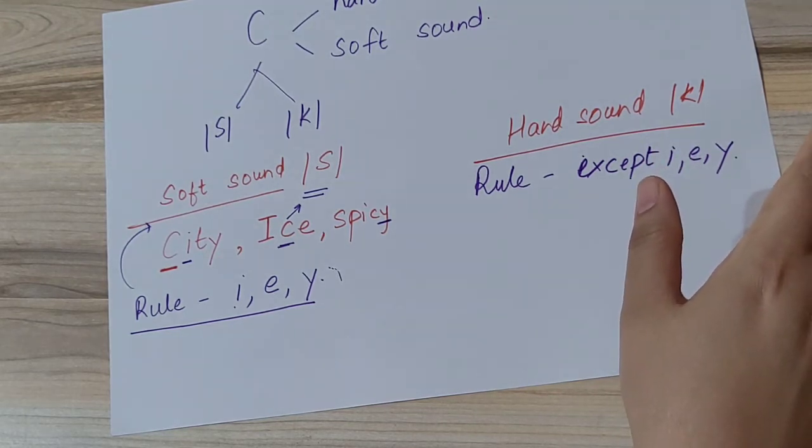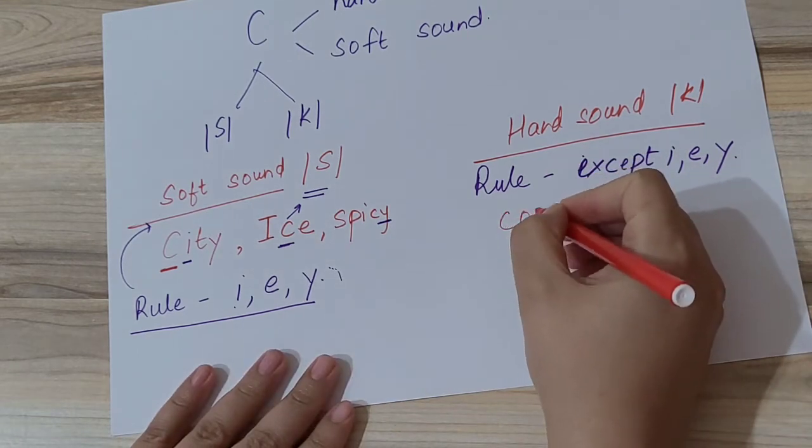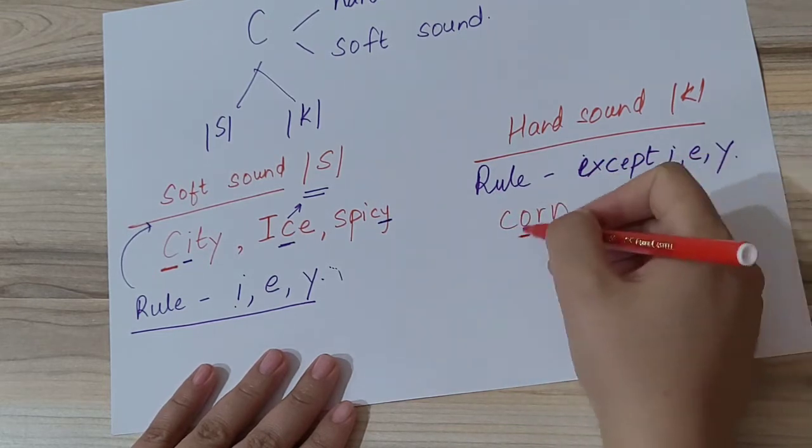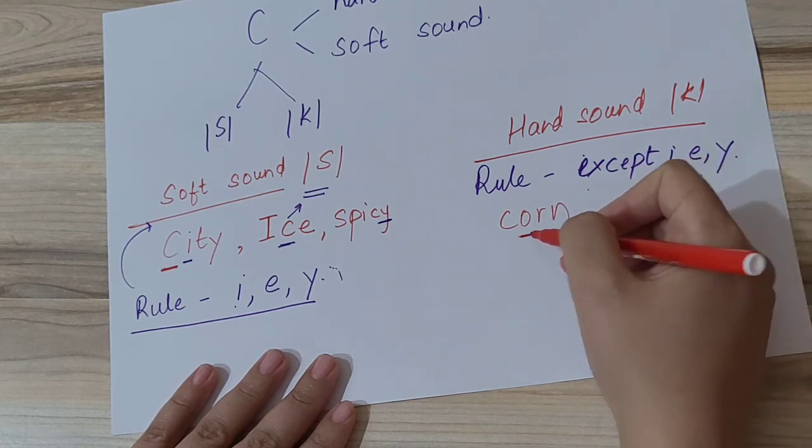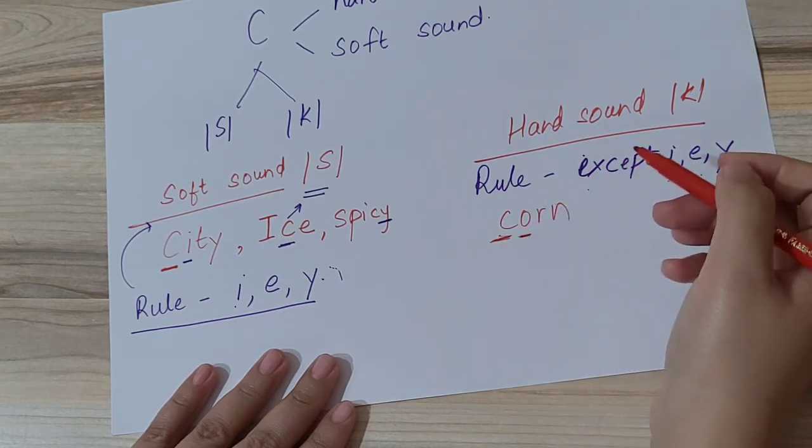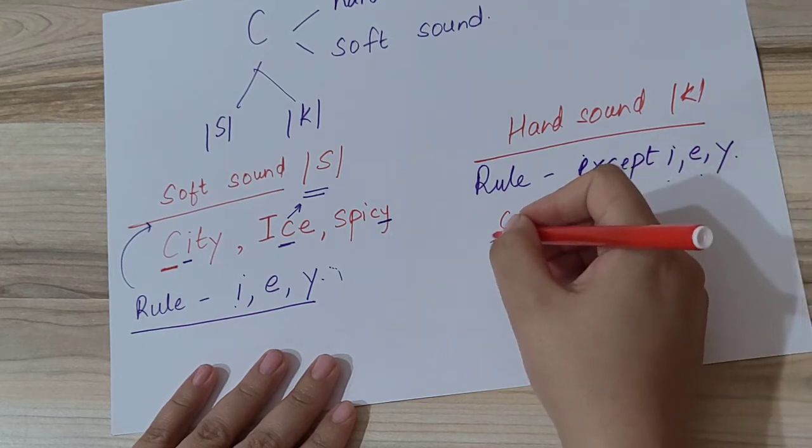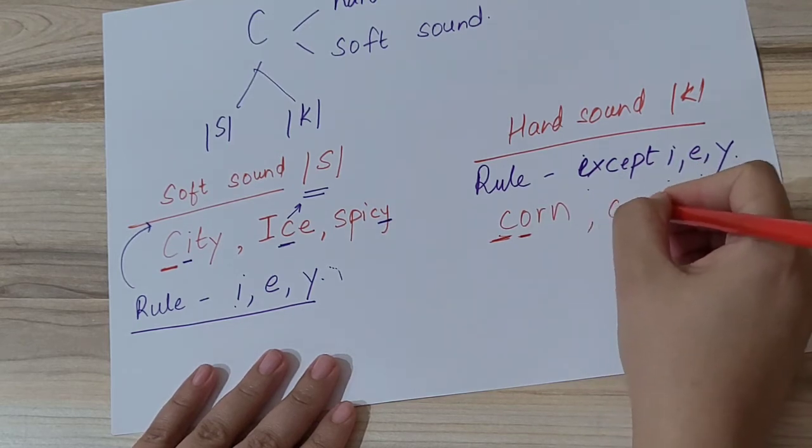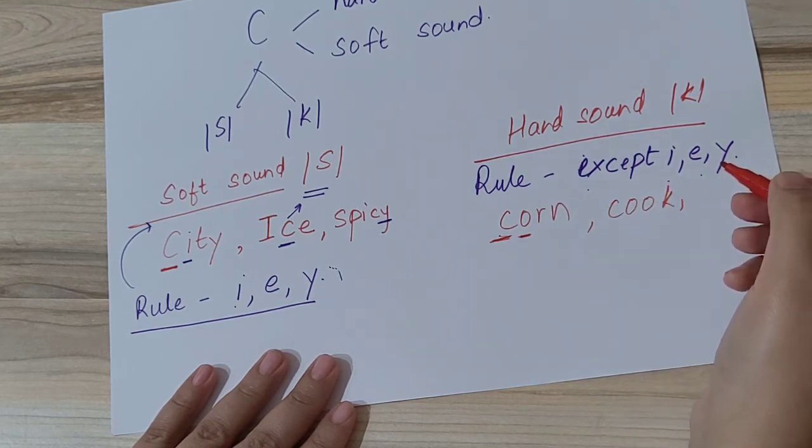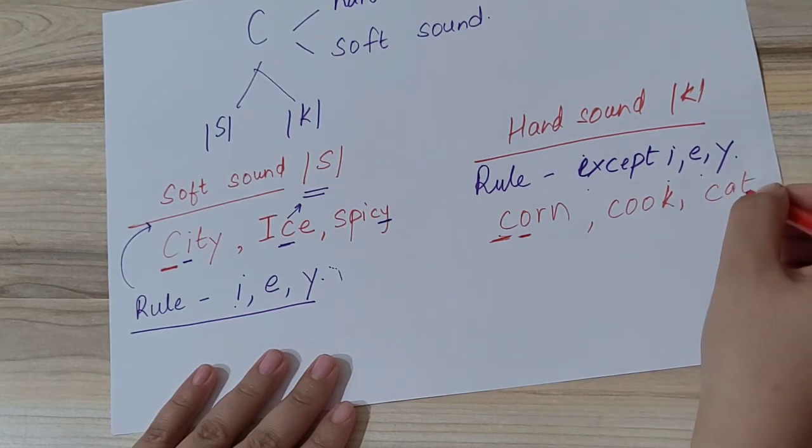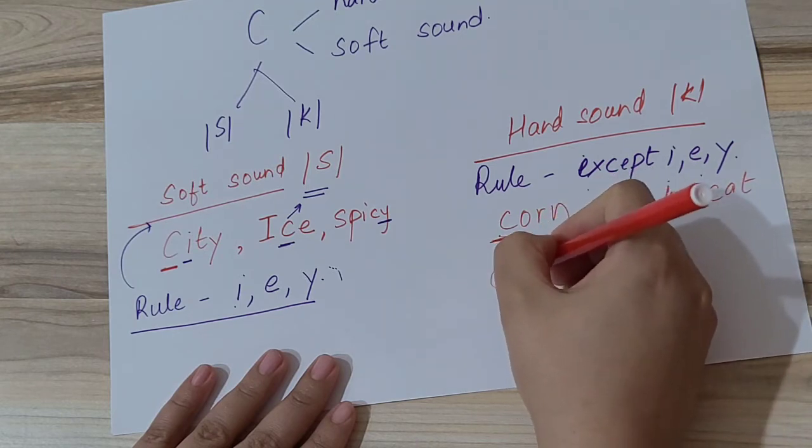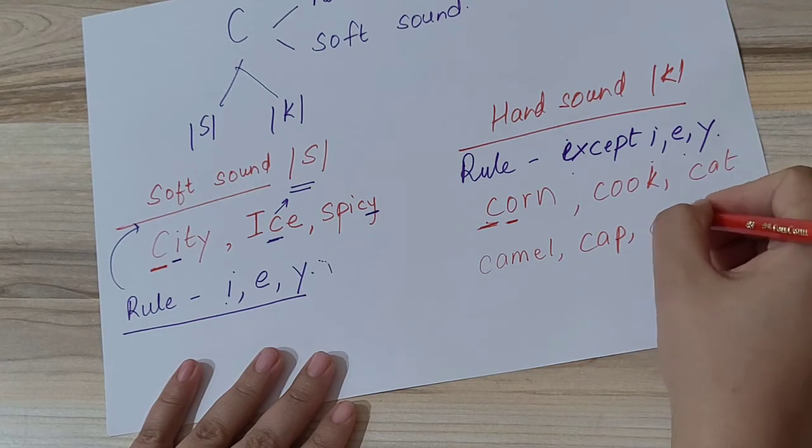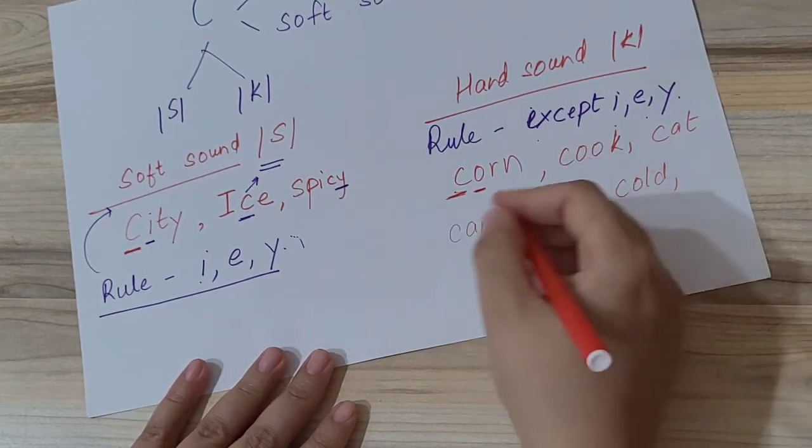For example: Corn. Here the letter which is coming after C is O. As per our rule, it is an exception - except I, E, and Y. This word has O, so here we will pronounce C as 'ka'. So corn, we will not say 'sorn', we will say corn. Similarly: cook, cat, camel, cap, cold, candle, and so on.